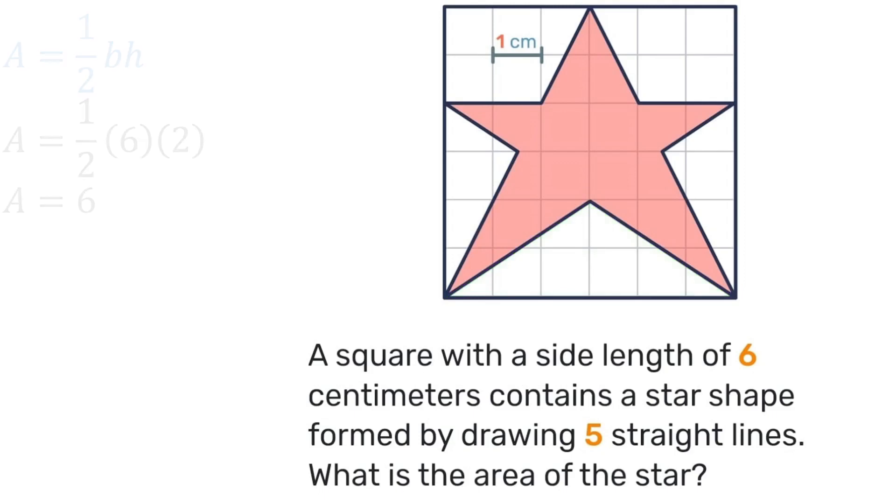So back to our overall idea here. We're going to subtract all those white areas from the total area of 36. So there was a 10, a 6, and a 6. That adds up to 22. 22 subtracted from 36 also gives us that the answer is 14 square centimeters.